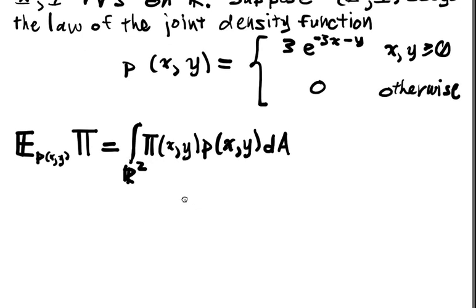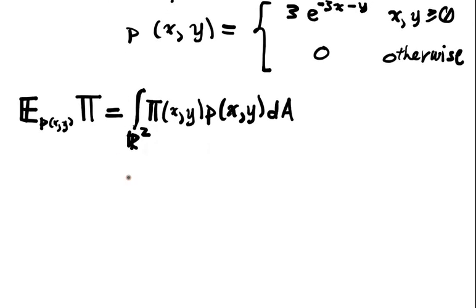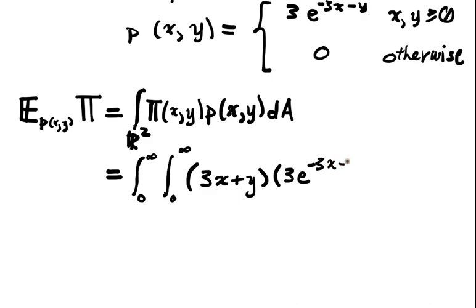We want to do a nested integral now, and we have to deal with infinity, so we've got an improper integral. Let's integrate with respect to x first on the inside. We notice that we only have to worry about the integral from 0 to infinity. This is (3x+y) times 3e^(-3x-y) dx dy.